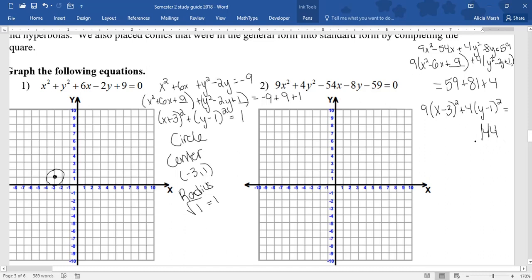Now, since this one has numbers in front, I do need to divide by that 144. So I'm going to divide everybody by 144. 9 over 144, that simplifies into 1 over 16. So it would be x minus 3 squared over 16 plus y minus 1 squared over 36. And we're equal to 1. So this is an ellipse.